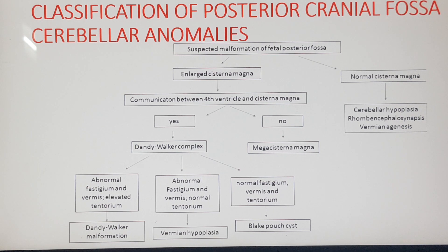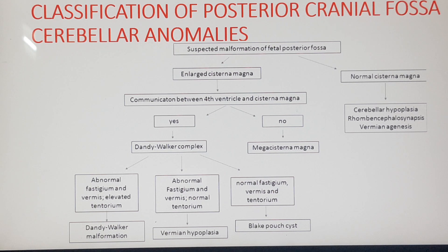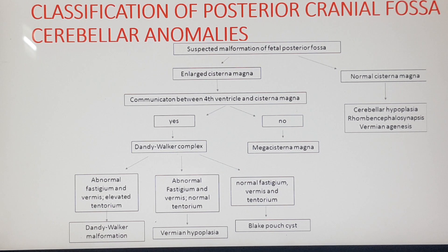In Dandy Walker complex, we have Blake's pouch cyst, vermian hypoplasia, and Dandy Walker malformation. In Blake's pouch cyst, the vermis, its fastidium, and the tentorium are normal. In vermian hypoplasia, the vermis and its fastidium are abnormal and the tentorium is normal. In Dandy Walker malformation, the vermis and its fastidium are abnormal, there is elevation of vermis and elevation of tentorium.